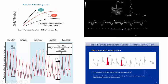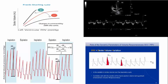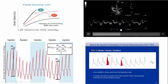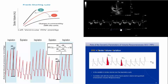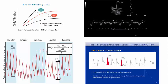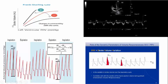And here is the pulse pressure variation with the patient on controlled mechanical breath. Why is there this fluctuation in a fluid-responsive state in a patient on controlled mechanical breath? To clearly understand these dynamic measures for fluid responsiveness, you need to understand the Frank-Starling curve.